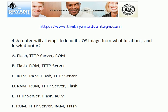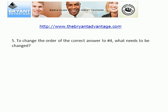Now let's take a look at the question where we were asked in what order, where will the router look for the IOS image? The correct answer is A. First, the router is going to try to load the image from Flash. If none is found, it's going to look to a TFTP server. And if no TFTP server location has been defined, then the router will look to its ROM for an image. To change that order, you need to change the configuration register value, and you need to do that with a great deal of care.